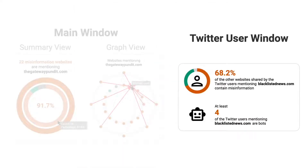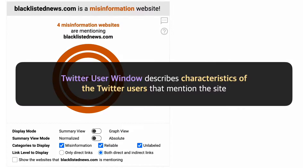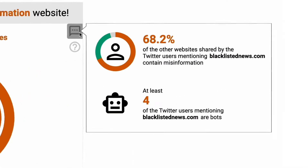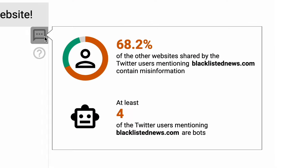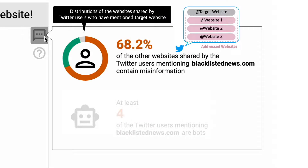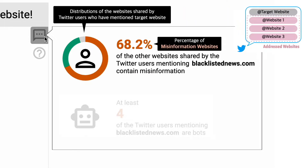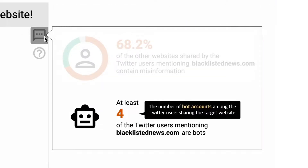The Twitter user window describes the characteristics of the Twitter users that mention the site. It is shown when the user clicks the social media button. We illustrate the distributions of the websites shared by the Twitter users who have mentioned the target website, along with the number of accounts sharing the website.